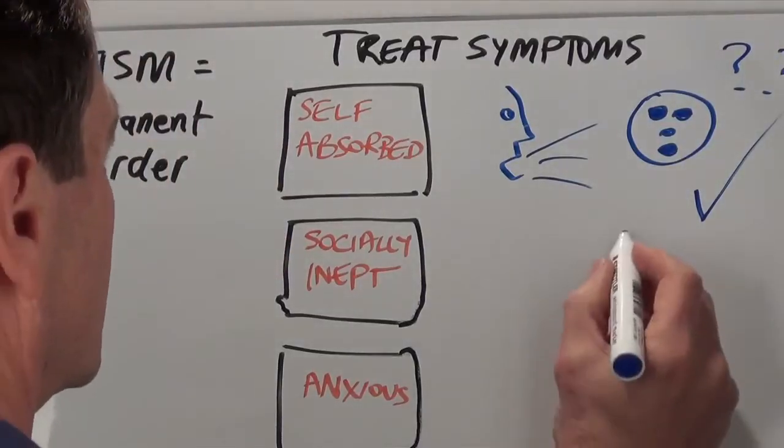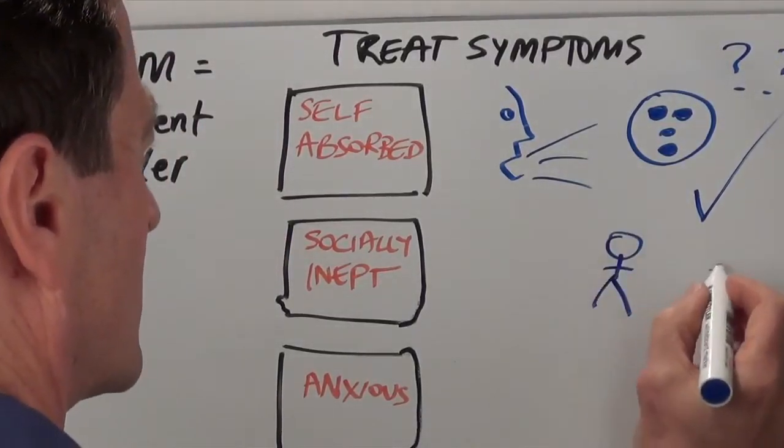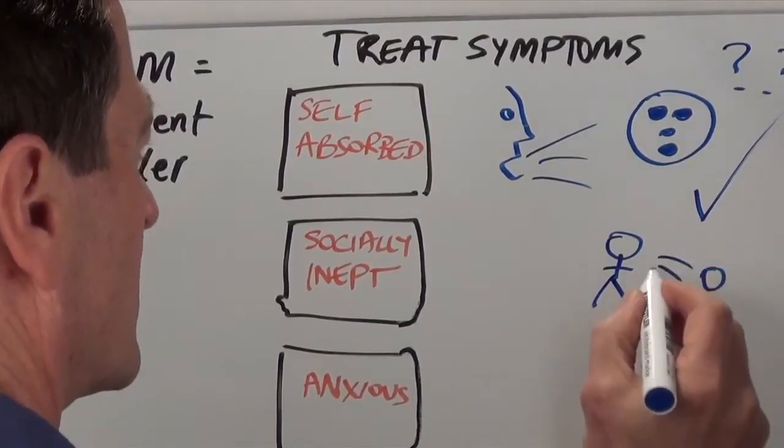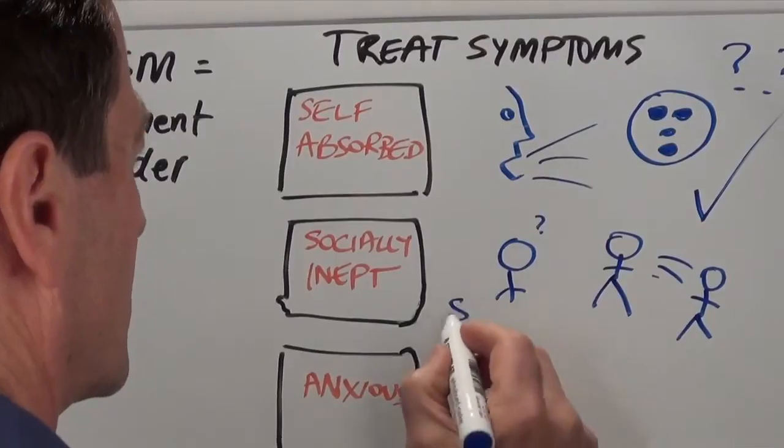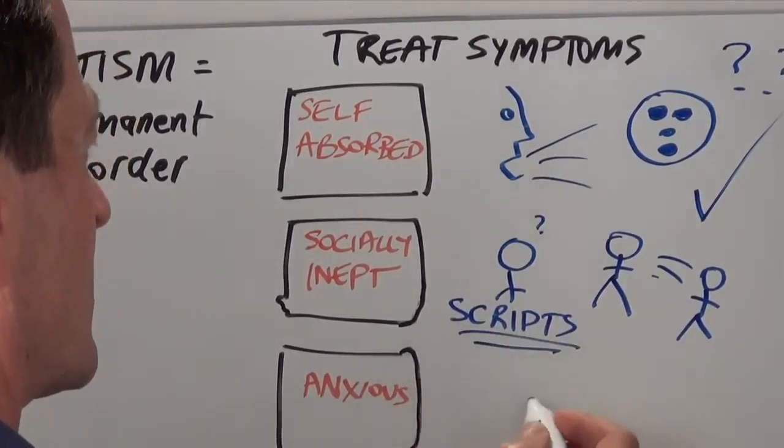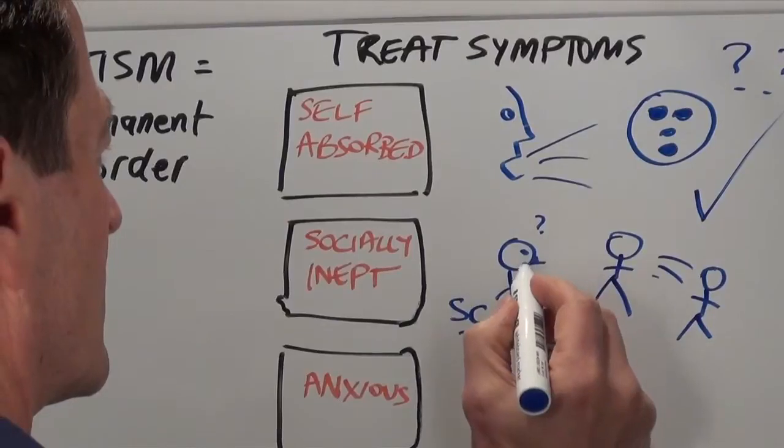Another classic autistic trait is your child doesn't understand social interaction. Here are two people talking and your child looking on. The patch-over remedy is your child is given scripts to learn, meaning he or she is told what to say.